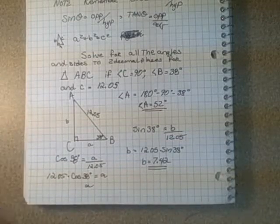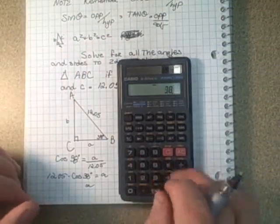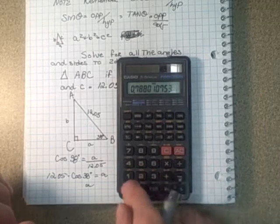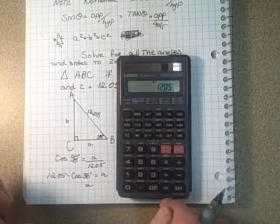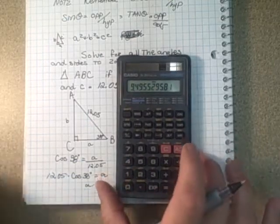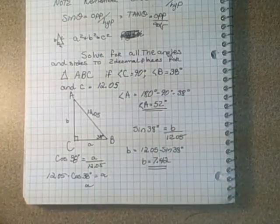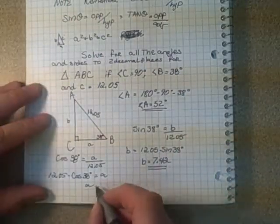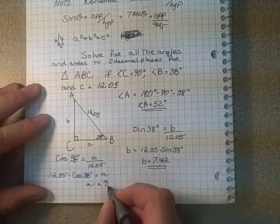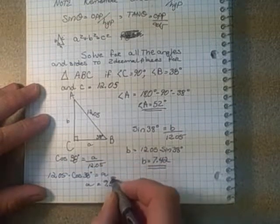So similarly, we have A equaling 12.05 multiplied by the cosine of 38 degrees equals A. So A, as we plug that one in, we take our 38 cosine, and we multiply by 12.05, and round off to 2 digits, we get 9.50. That's our first question.